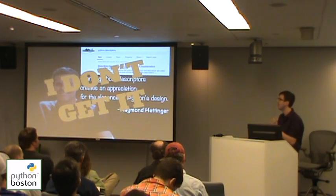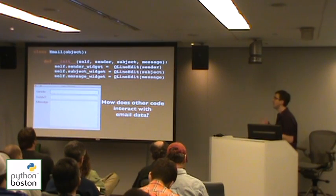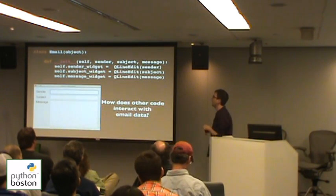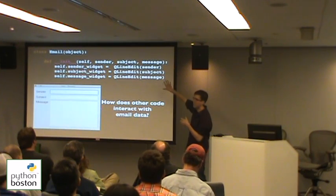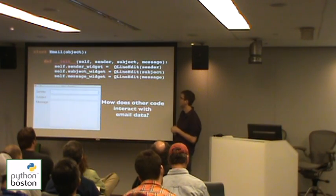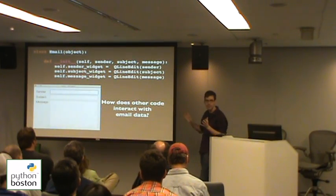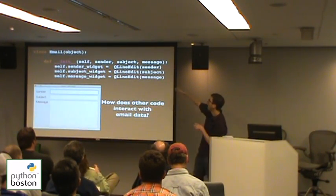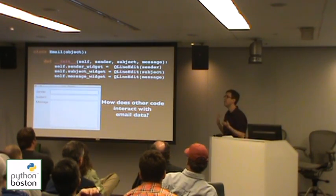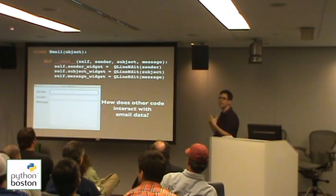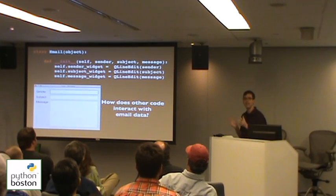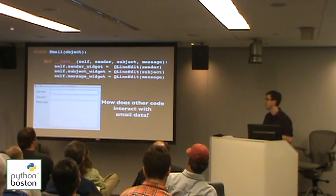So I'm going to try and introduce a better use case for descriptors. Here's a not fully contrived example. Let's say you're building something and there's some GUI stuff using Qt4, and you need to represent emails. You have a form with sender, subject, and message fields, and your email object contains widgets for those things. Other parts of your code need to be able to programmatically access and set the content in an email. So the question is: how do you design an email class to get a nice Pythonic interface?